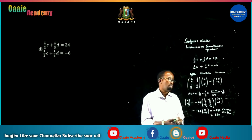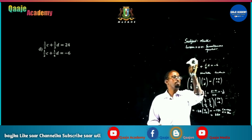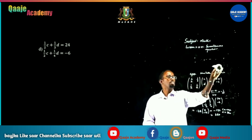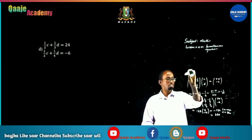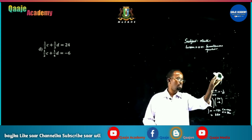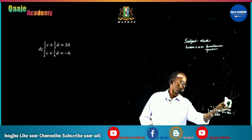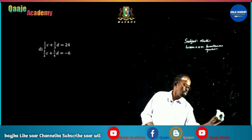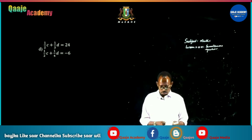That is the solution by matrix method. You can still use Cramer's Rule to find the same values.